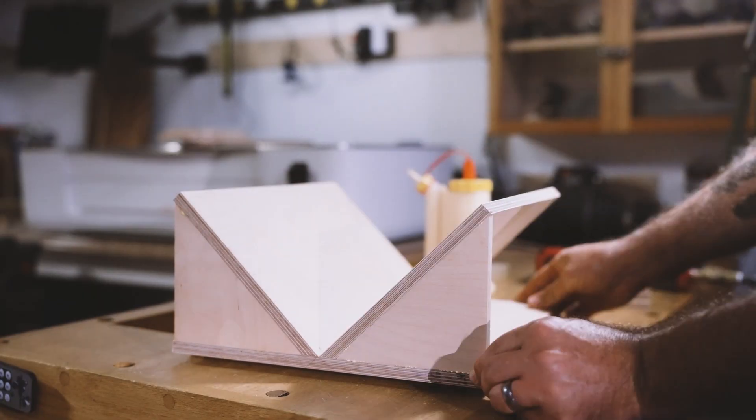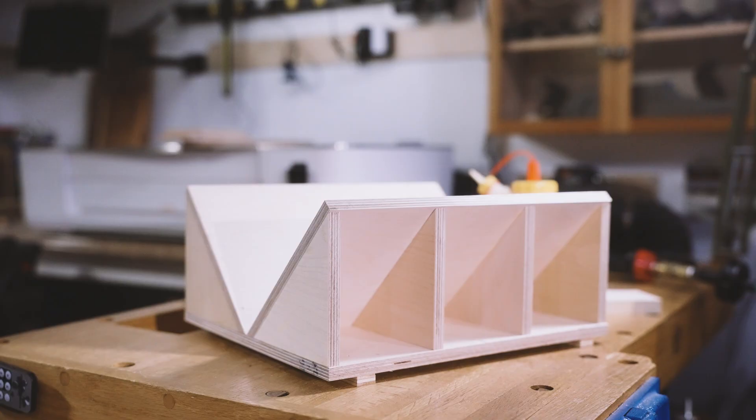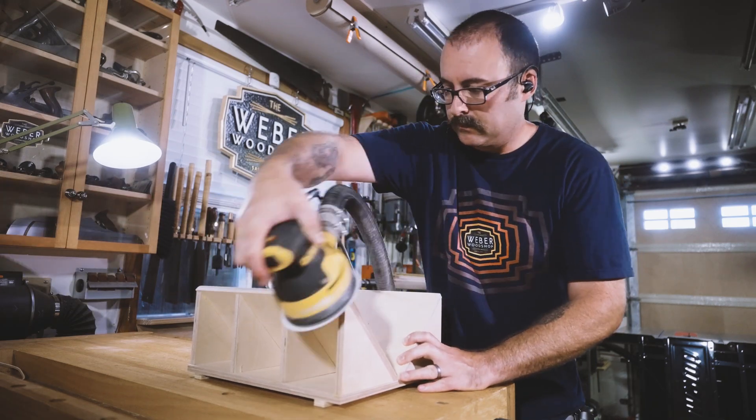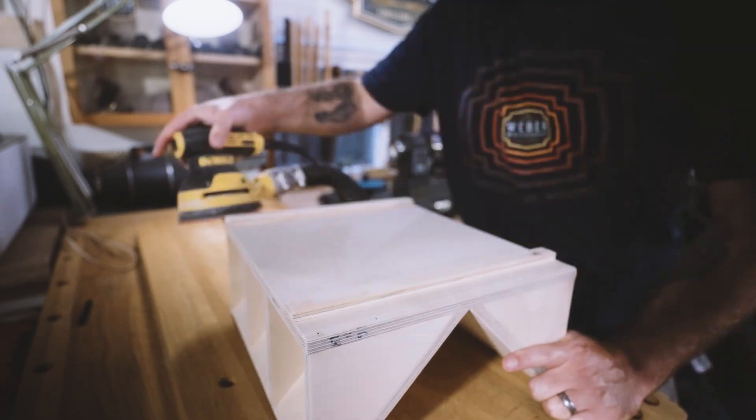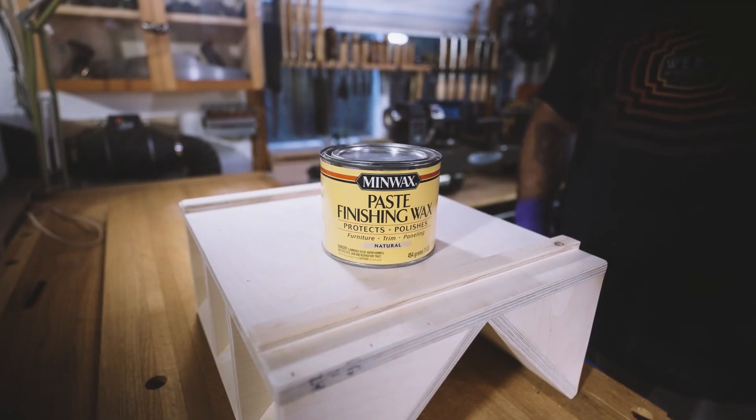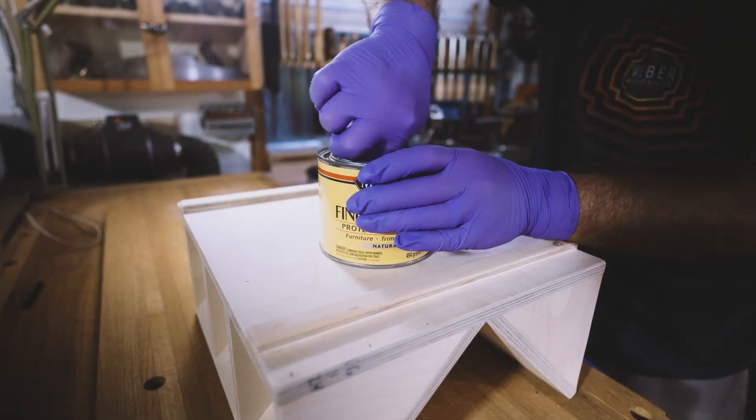And we'll repeat that whole process for the angled bed on the other side. Go ahead and sand down all the edges to knock down any splinters or rough spots, and sand the edges of the runners as well. Adding wax to the runners and bottom will help it slide smoothly on the table saw.